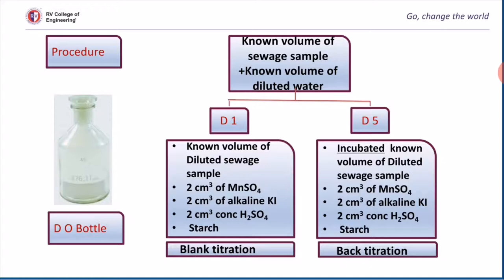Dissolved oxygen content of the first bottle is determined immediately by adding these chemicals: manganese sulfate, alkaline KI solution, followed by concentrated sulfuric acid. Iodine will be liberated. The liberated iodine is titrated against sodium thiosulfate. Using starch indicator, we can find how much oxygen is present in the water sample. This titration is called blank titration.